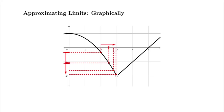We keep moving to the right, because we're on the left side of 3, getting closer and closer. Like Zeno's paradox, this is almost like taking another step and dividing the distance in half, marching our x values towards 3 and seeing what happens to the y values. As we move along this path, our y values are decreasing — they are dropping. We can see the pattern: they're getting closer and closer to negative 2. So the limit as x approaches 3 from the left of f of x is negative 2.